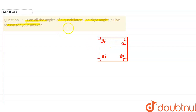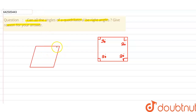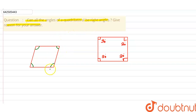It is true only for a square. If we take a rhombus — let's suppose this is our rhombus — you can clearly see that this particular angle is not equal to 90 degrees. This angle is not equal to 90 degrees, this angle is not 90 degrees, and this angle is also not 90 degrees. So in the case of a rhombus, which is also a quadrilateral, we cannot say that all angles of a quadrilateral are right angles.